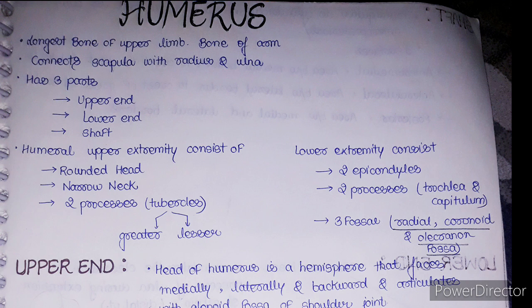The muscle present in the arm is the biceps, so the bone present in the arm region is known as the humerus — it's the only bone in the arm region. It basically connects the scapula with the radius and ulna. The scapula is the shoulder bone we have already studied, and the radius and ulna are the forearm bones we will study in later sections. The humerus has three parts: upper end, lower end, and shaft. The shaft connects the upper and lower ends.